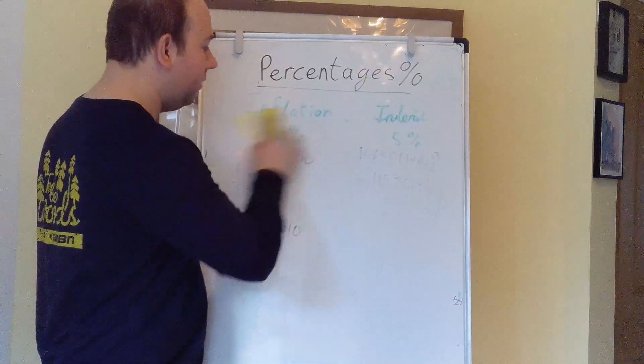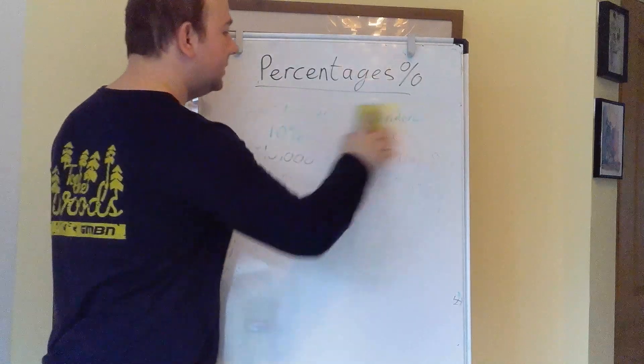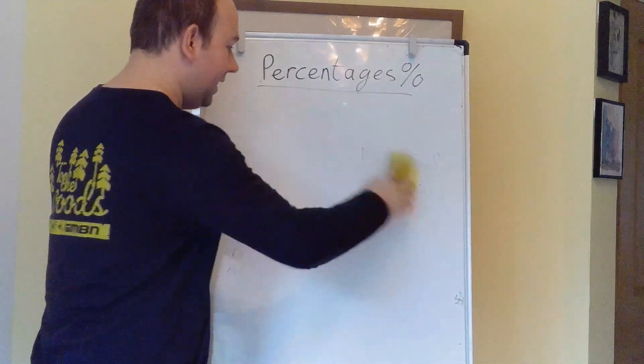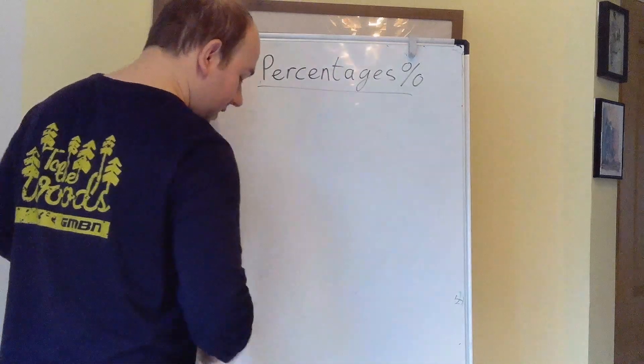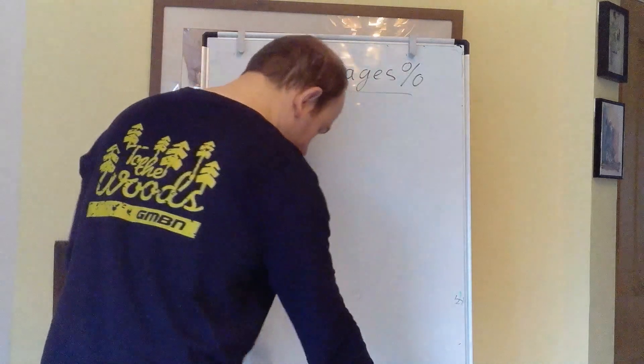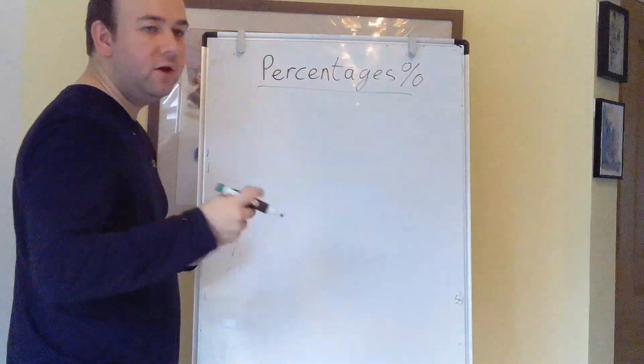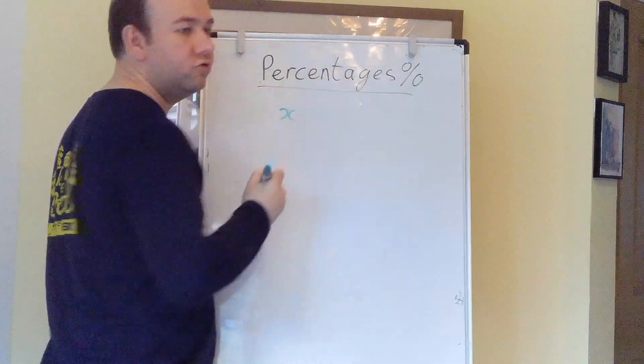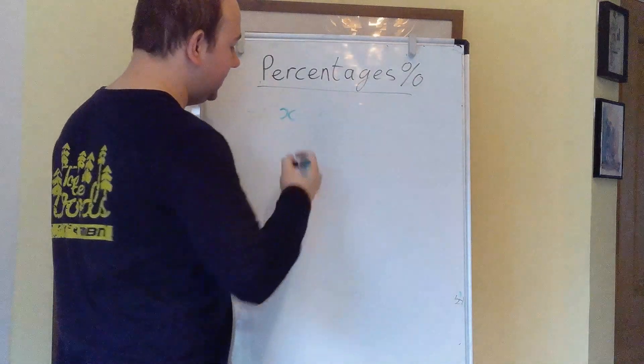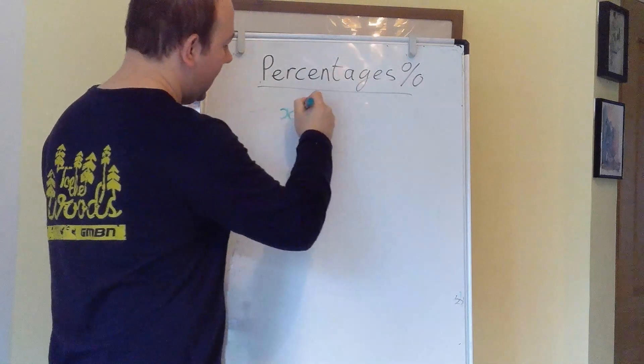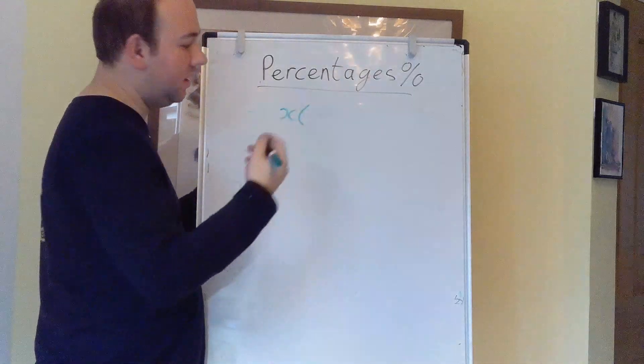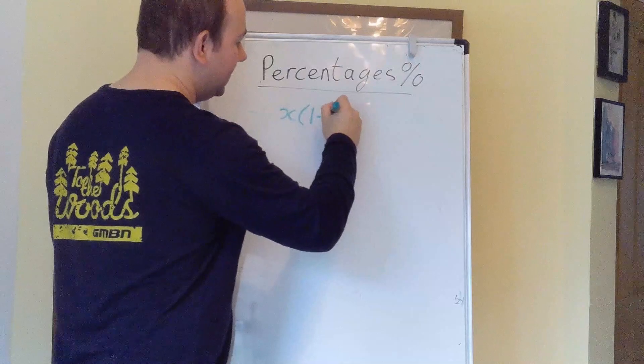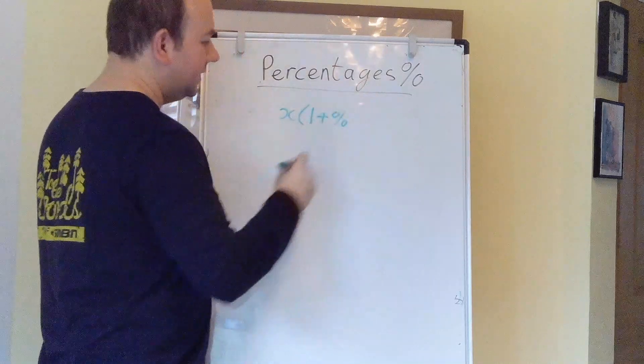If you're interested in where that compound interest formula comes from, this is where it starts. If you had an amount, and it's going to increase by a percentage, you take your amount x, and after a certain period, say a year, it's going to increase by 1 plus that percentage.